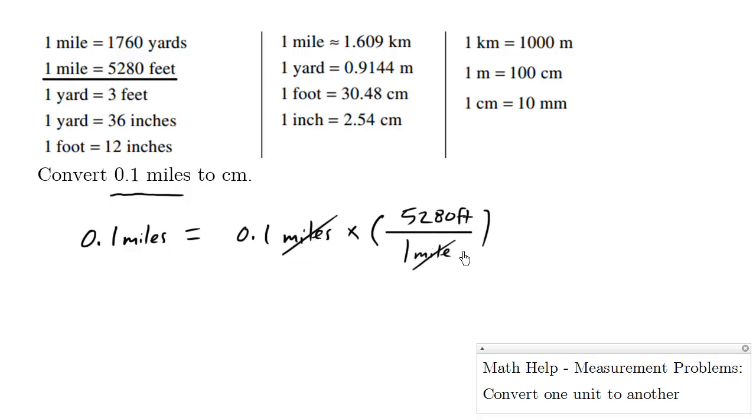Let's cancel out these units here. We end up with feet. So using your calculator, 0.1 times 5280 feet equals 528 feet.